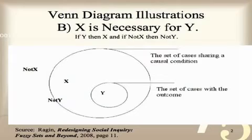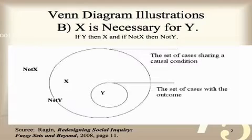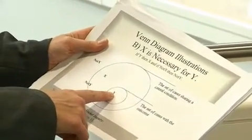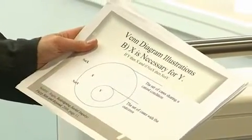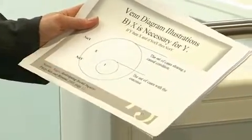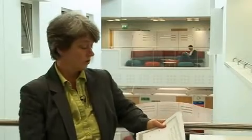QCA is a formal method, and as a formal method it uses mathematics for some of its procedures and offers some measurements as outcomes, but I'm just showing simple summary diagrams here. My third diagram is also a Venn diagram and it shows the conditions for necessity — for X to be a necessary cause of Y. Here Y is in the smaller circle and X is the larger circle. Not-X is the space outside of both the X and Y circles. This diagram comes from a book by Charles Ragin, Redesigning Social Inquiry.